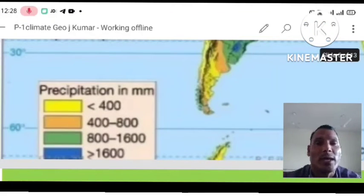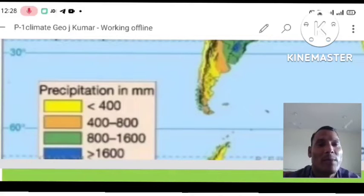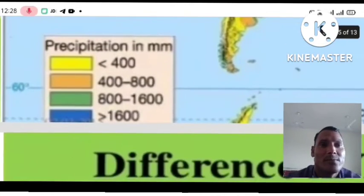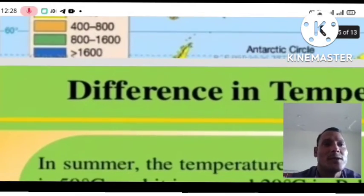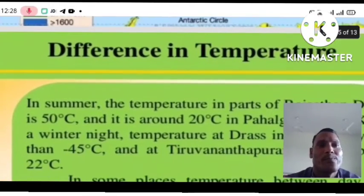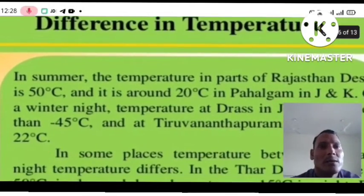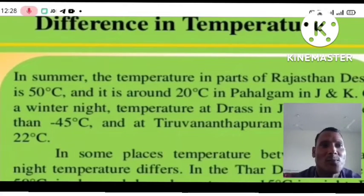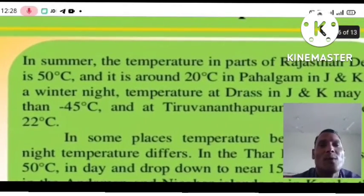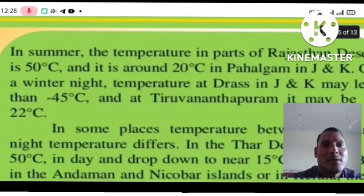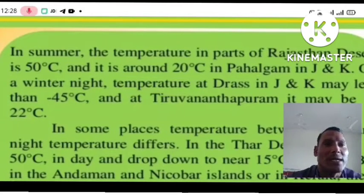The yellow color shows less than 400 mm rainfall. Now we will see the difference in temperature. In summer, the temperature in parts of the Rajasthan desert is 50 degrees centigrade.